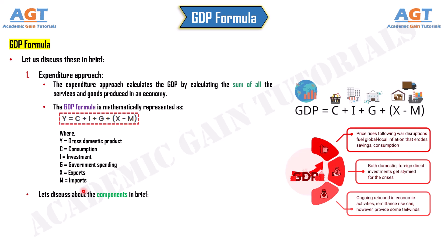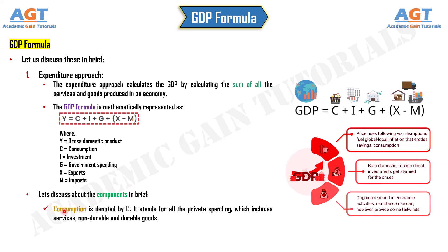Let's discuss the components briefly. Consumption is denoted by C. It stands for all the private spending, which includes services, non-durable, and durable goods.